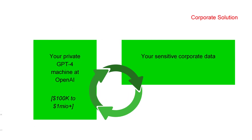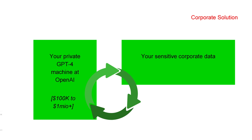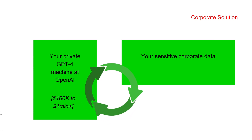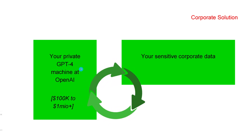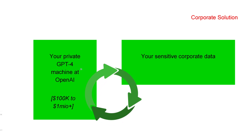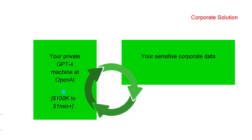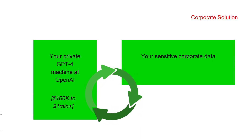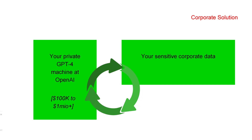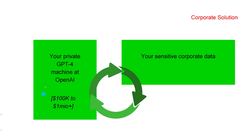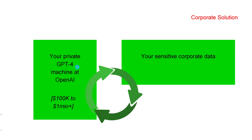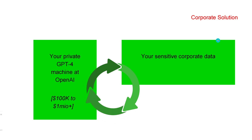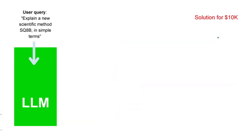There are three solutions. First, you are very rich — the corporate solution. You go to OpenAI and say, 'I want my private GPT-4 machine at OpenAI,' and you pay upwards of $100,000 per month, maybe $1 million. The financial resources are unlimited in this solution, and there you can train your private GPT-4 machine on your sensitive corporate data. The second solution is around $10,000 plus per year.